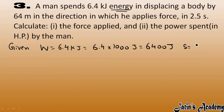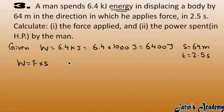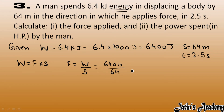Time is given as 2.5 seconds. First we calculate the force applied. Work done equals force into displacement, so force equals work done divided by displacement. Work done is 6400 joules and displacement is 64 meters — cancel it out — so we get 100 newtons.